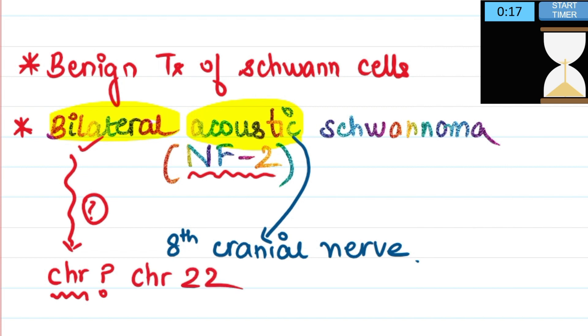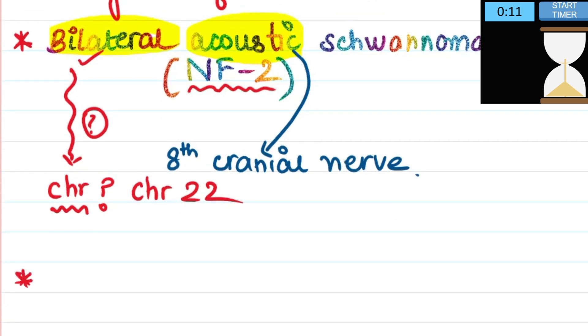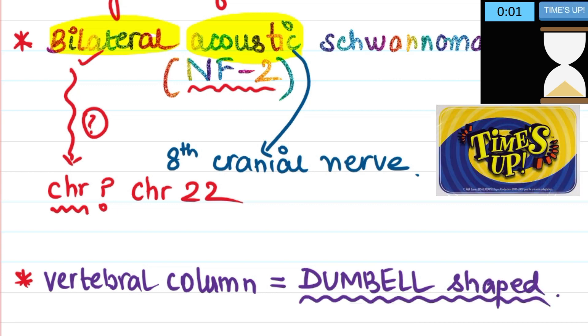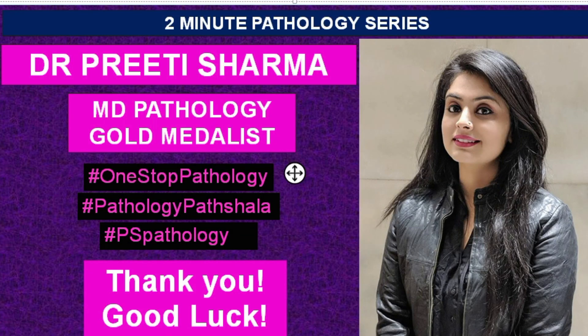The third thing that you need to know is that this particular tumor when involving the spinal cord and the vertebral foramen or the vertebral canal has a special shape that is also known as the dumbbell shaped tumor. These are all the important points that you need to know about schwannoma. Thank you and good luck!